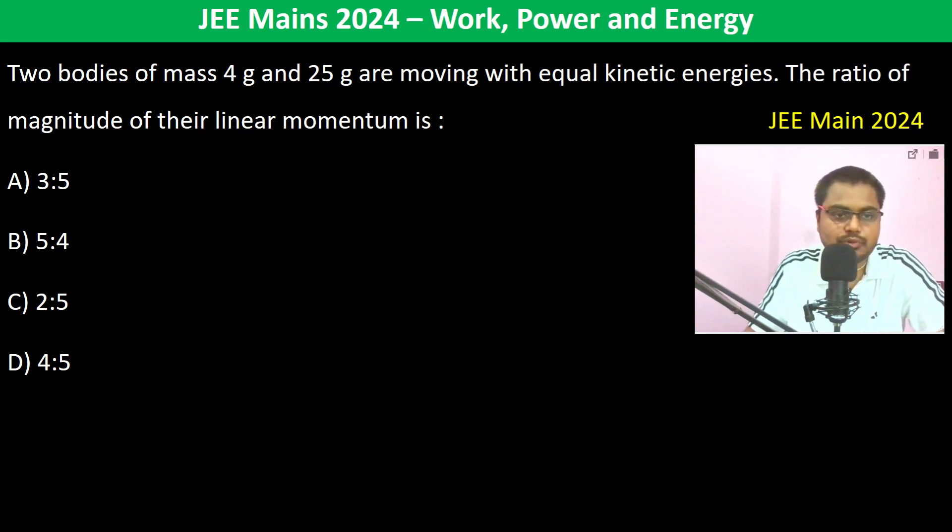Two bodies of mass 4 gram and 25 gram are moving with equal kinetic energy. So therefore I can write half into 4 gram into V1 square should be equal to